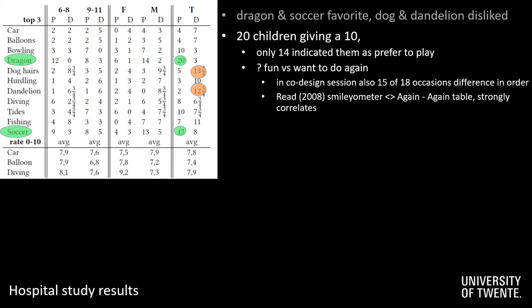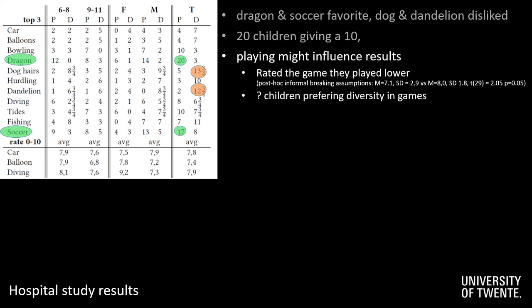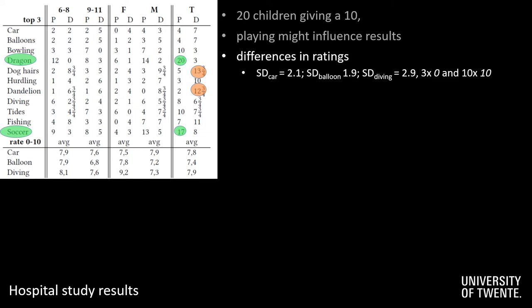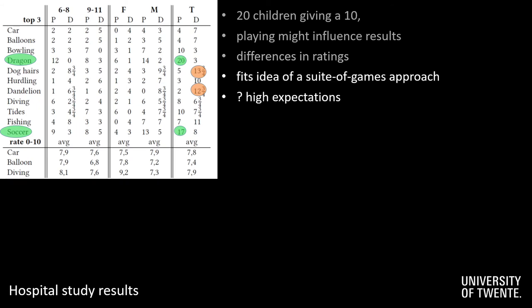However, whether one can really measure this difference accurately has to be seen, as they are likely to be strongly correlated as we found. Our results also indicate that playing a game might influence whether they prefer to play that metaphor, as the children rated the game they played lower. Perhaps this is an indication that children like diversity in the kind of short games they could play. Both this difference in ratings, as well as a preference to not play what they already played, strengthens the idea that a suite-of-games approach might be suitable in such a setting.